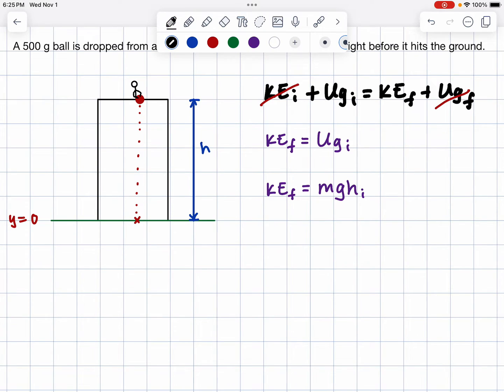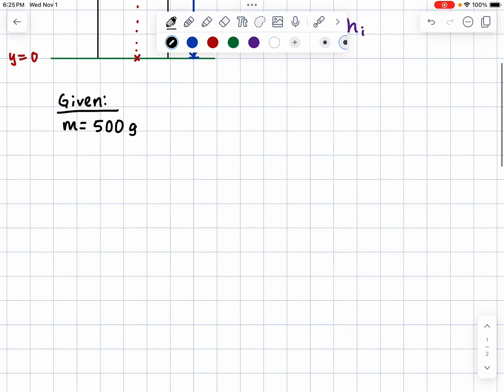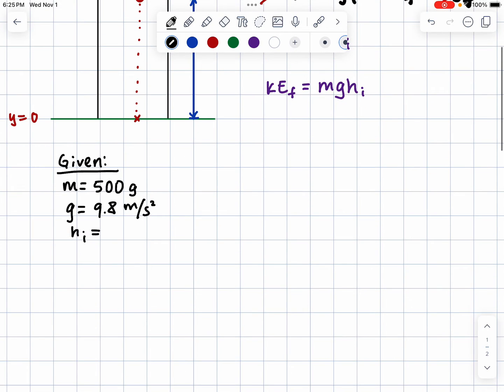When we write down what we know, we have the mass of the ball, 500 grams, and then we know the acceleration of gravity, and we know the initial height. It was 9.4 meters.